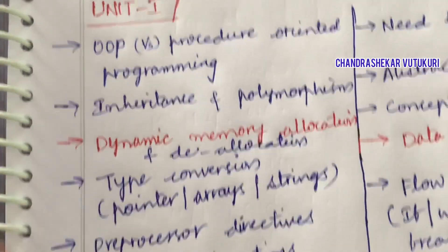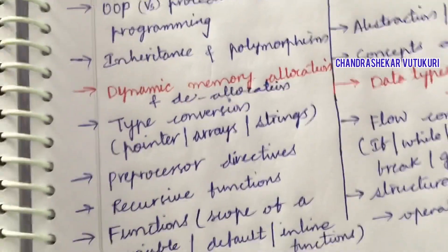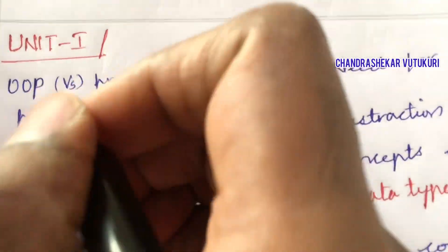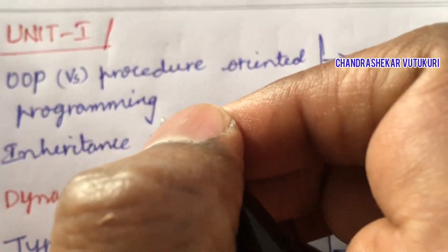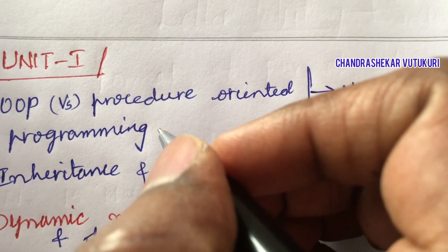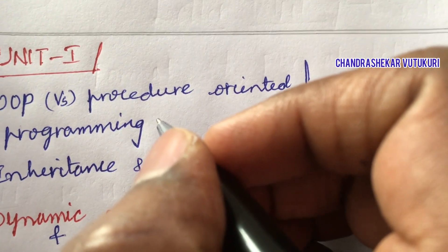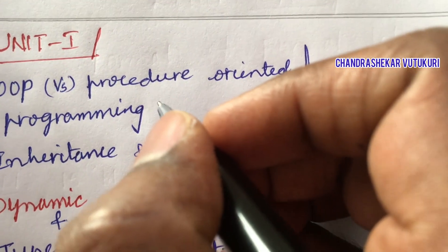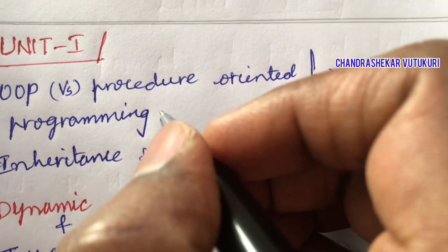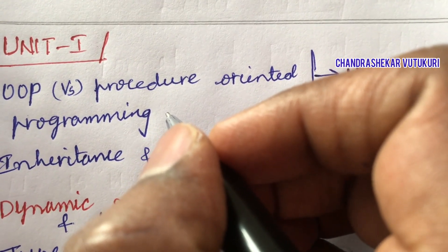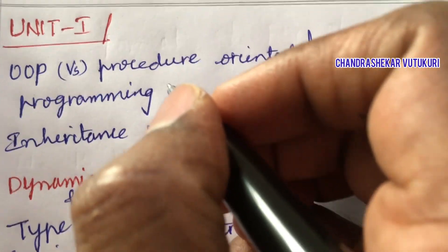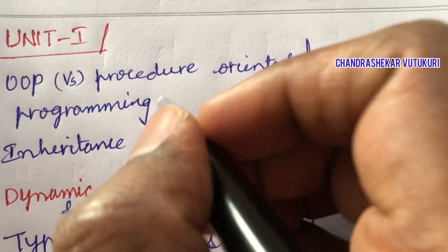Dear students, this course is lengthy in its structure. You are supposed to develop programs, and students should have knowledge of PPS — the first year Programming for Problem Solving course. You need to have minimum basic fundamentals to go through this course and to develop programs related to inheritance, polymorphism, and exception handling.